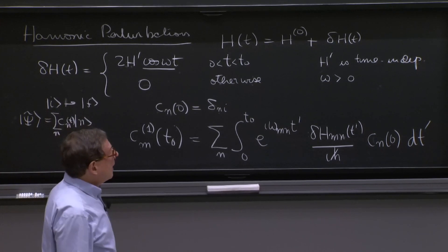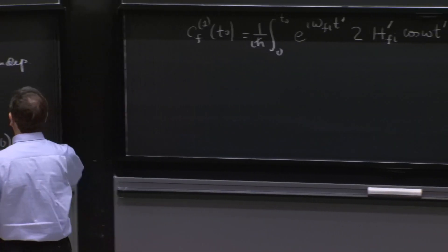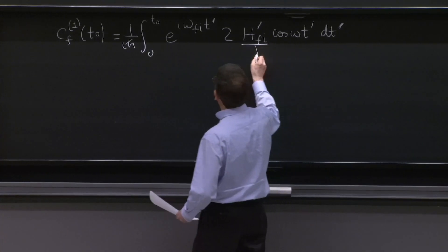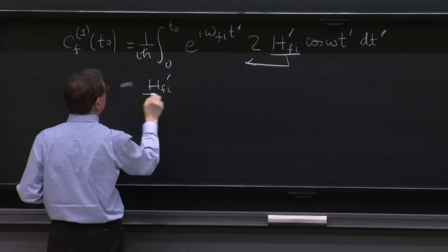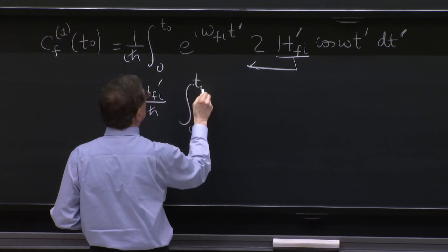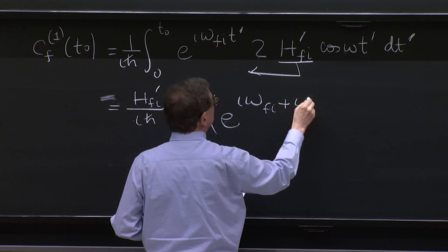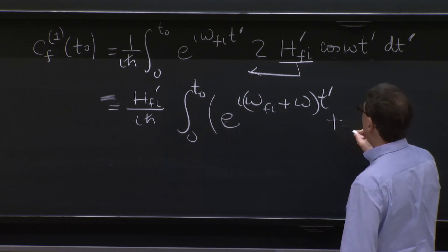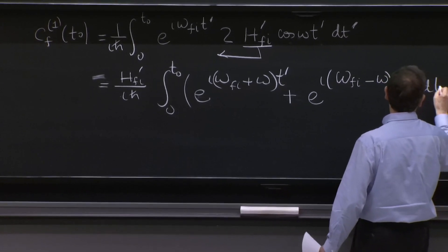We have everything there. And h fi, of course, doesn't have time dependence. So we said h prime has no time dependence. So that thing can go out of the integral. So this will go out. And the integral is simple because you have now h fi prime over i h bar. And the 2, we leave it for the cosine. So we get 2 integrals, t0 e to the i omega fi plus omega t prime from the first exponential in the cosine plus an e to the i omega fi minus omega t prime from the second exponential of the cosine dt prime.